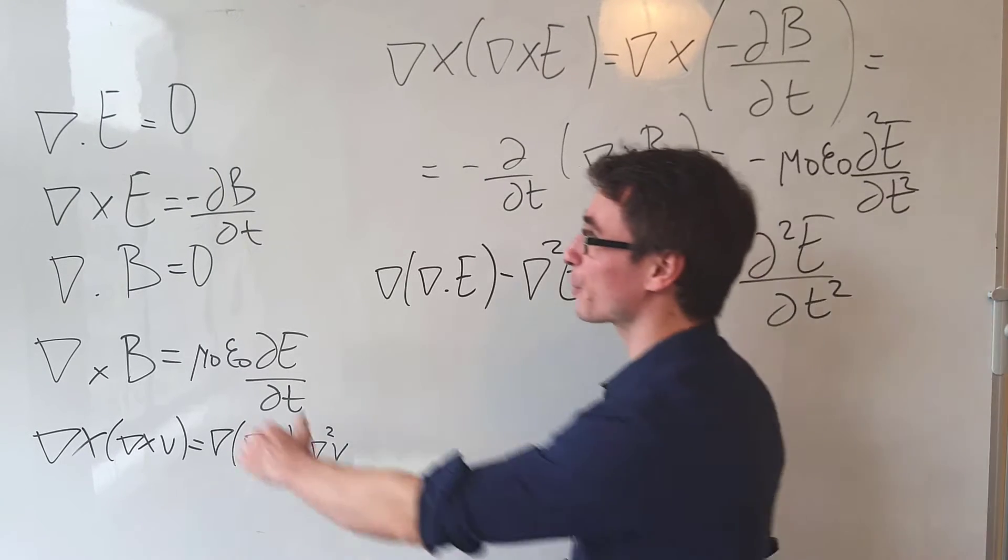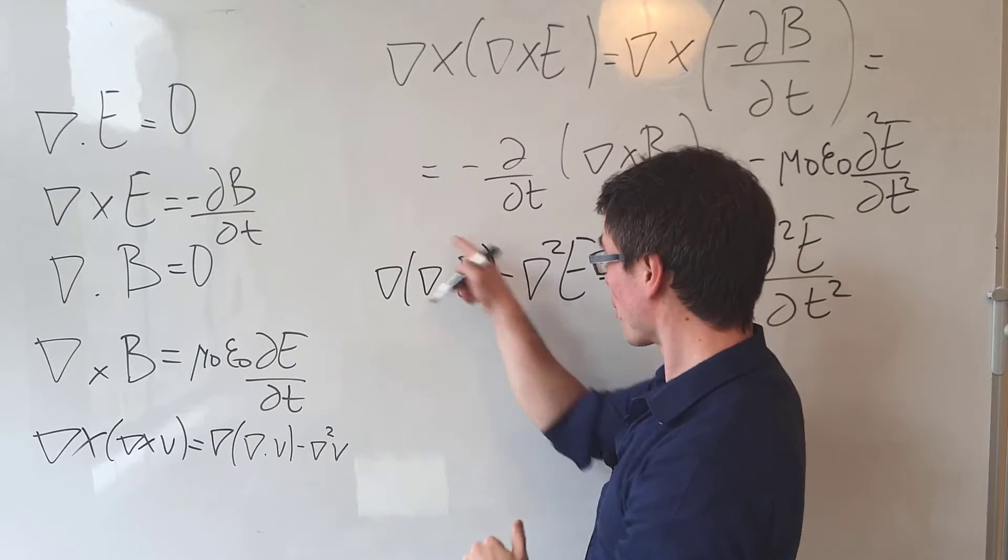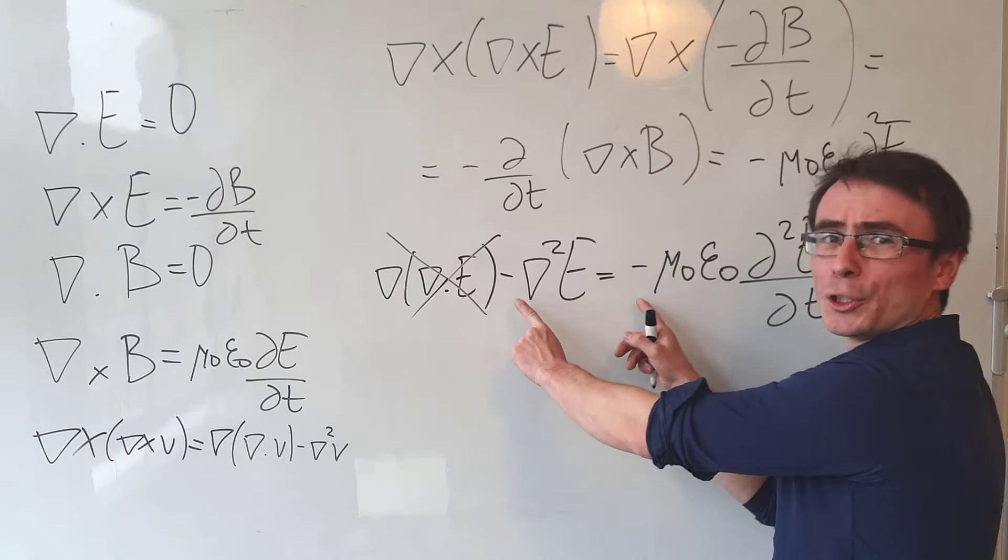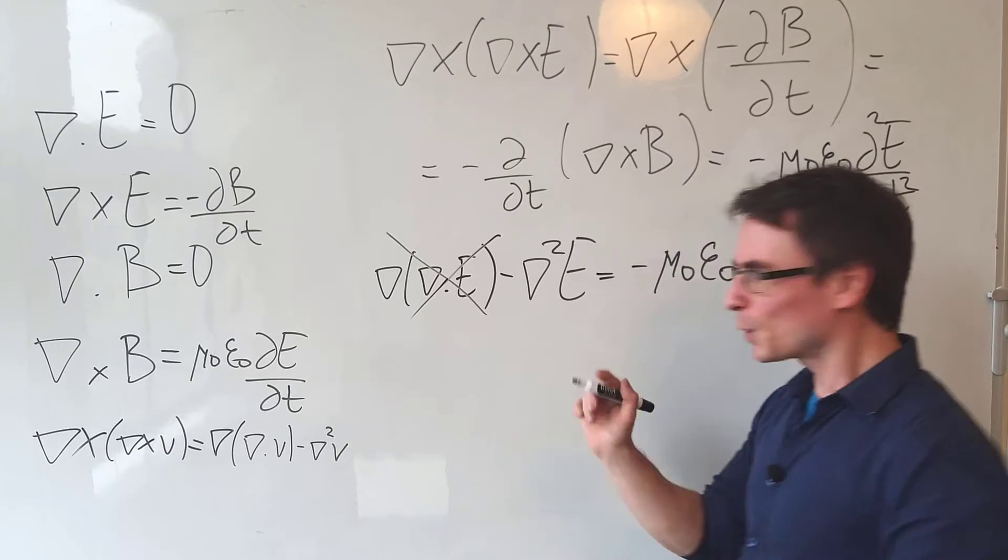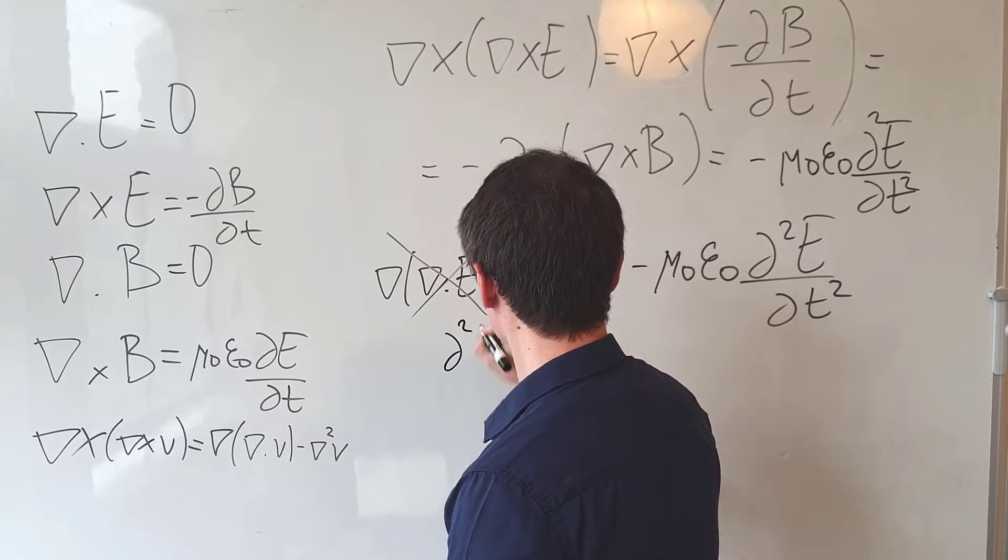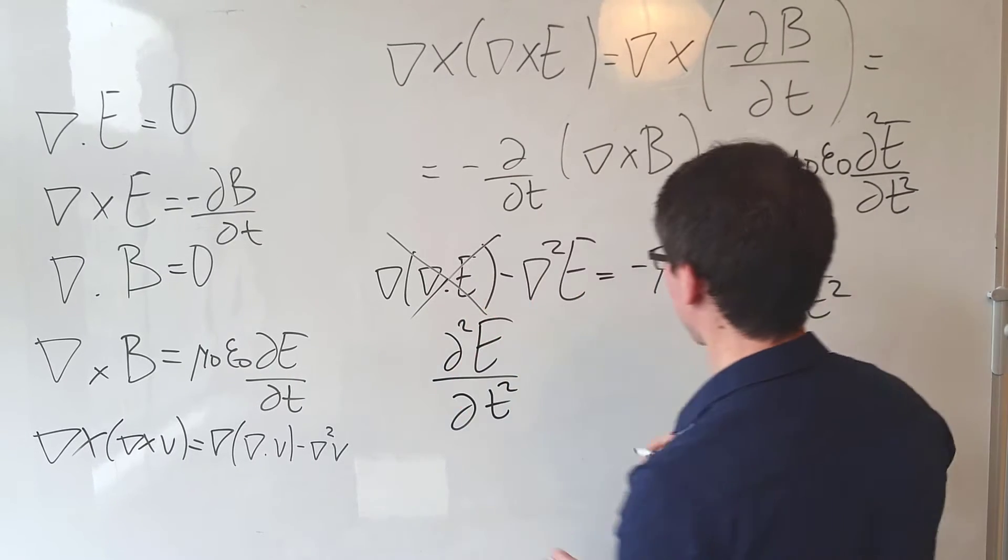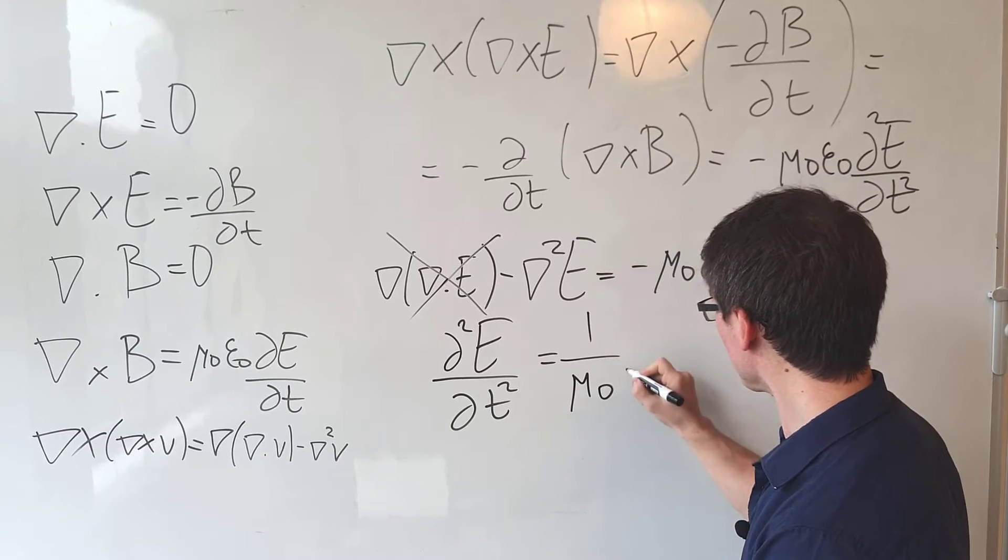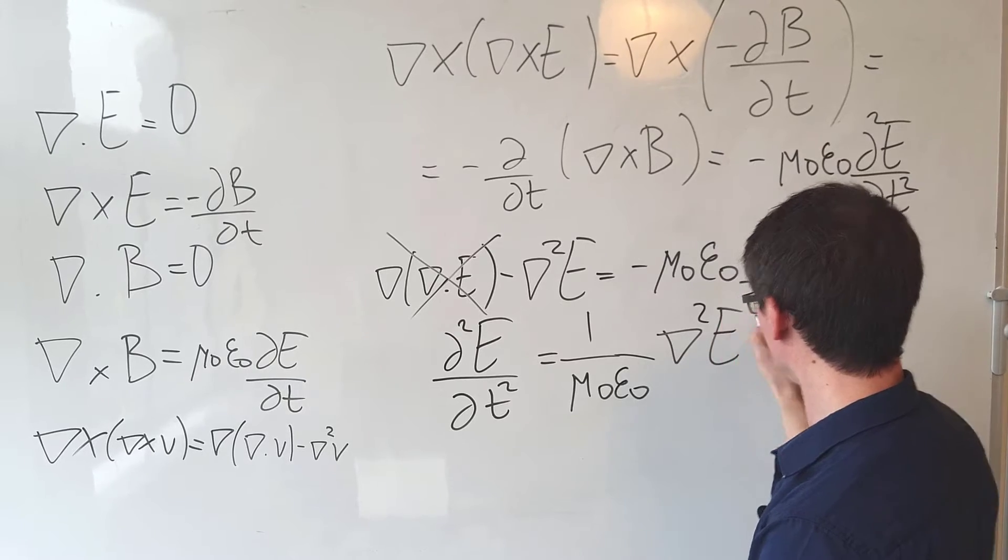Hang on a minute. In the absence of charge, the divergence of E is actually zero. So the left hand side of this equation can go. Those two negative signs will also cancel one another. And what I'm going to do is just rearrange for the time derivative. And what we get is that the second time derivative of the electric field is actually equal to 1/(μ₀ε₀) multiplied by the Laplacian of E.